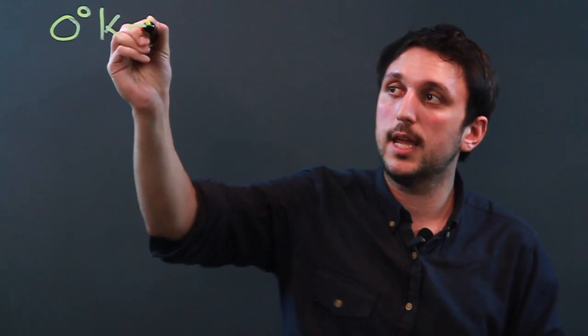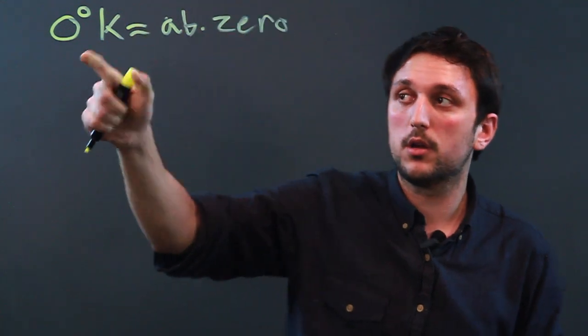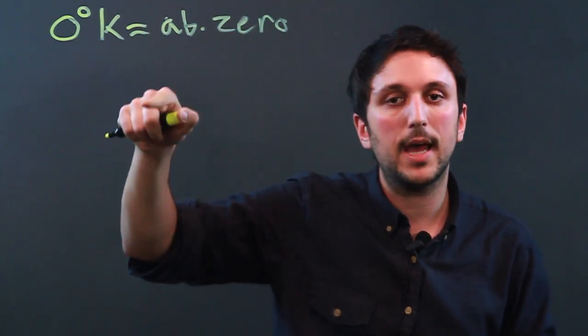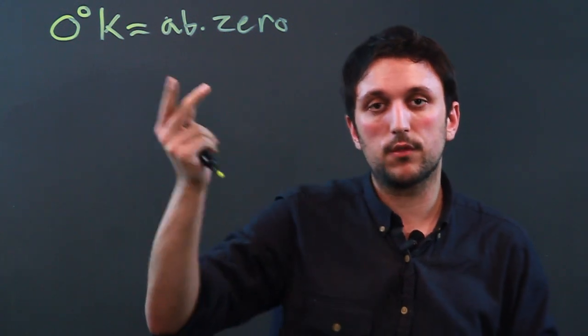So with Kelvin, zero degrees Kelvin is absolute zero. This is the best way to remember converting Kelvin to Celsius because you cannot have negative Kelvin. If you get negative Kelvin, you've done something wrong.